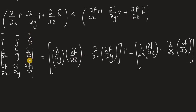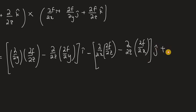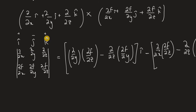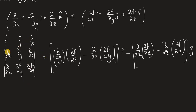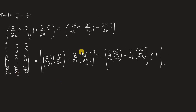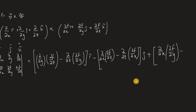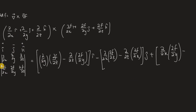Now we're in the k-hat, which is positive. We cross out the k column and its row, then multiply: (∂/∂x)(∂f/∂y) minus (∂/∂y)(∂f/∂x). This gives us the k-hat component. You can write the hat labels at the front or at the end — it doesn't matter.